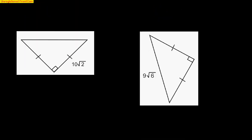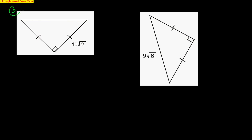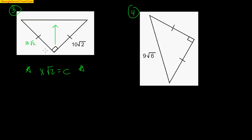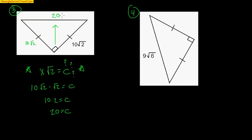Here are numbers 3 and 4 — be very careful with number 3. We're looking for the hypotenuse and the sides are 10√2. You might think the √2 is always with the hypotenuse, but that's not required. Always start with the formula: X√2 = C. I know the common side X is 10√2, so 10√2 times √2 equals C. Since √2 times √2 is 2, I get 10 times 2, so the hypotenuse is a nice, clean 20.